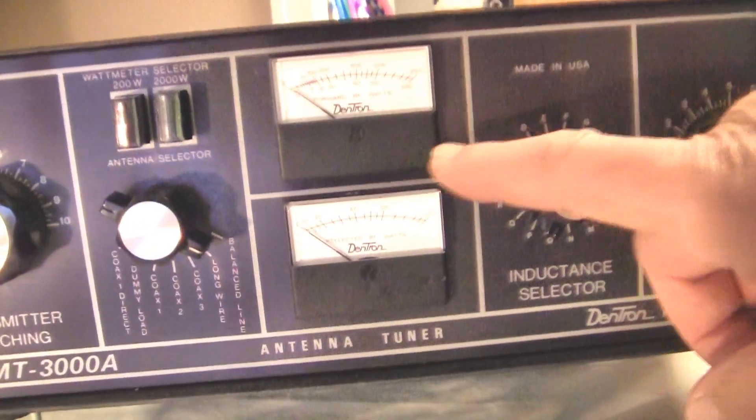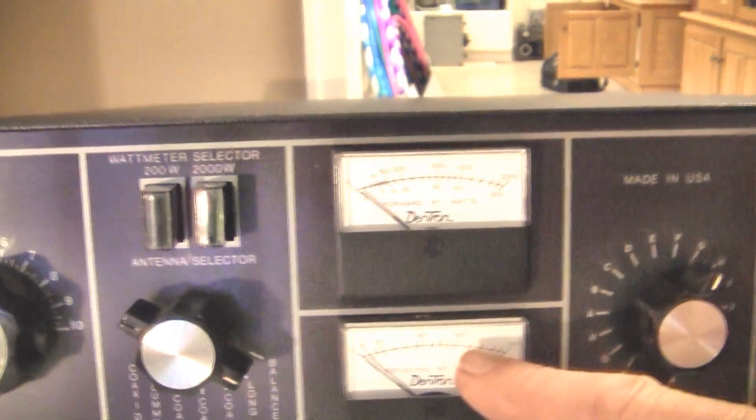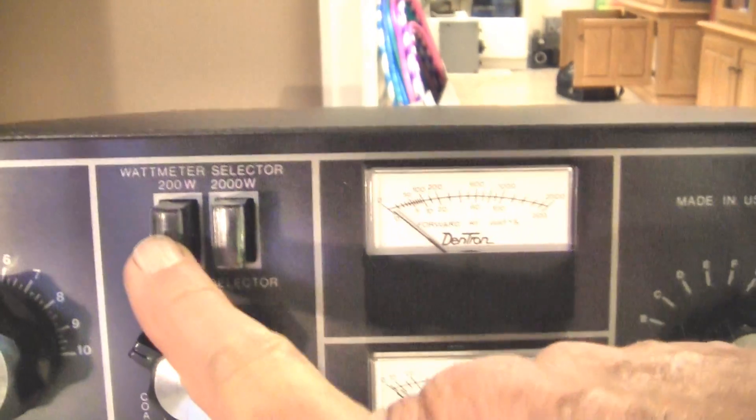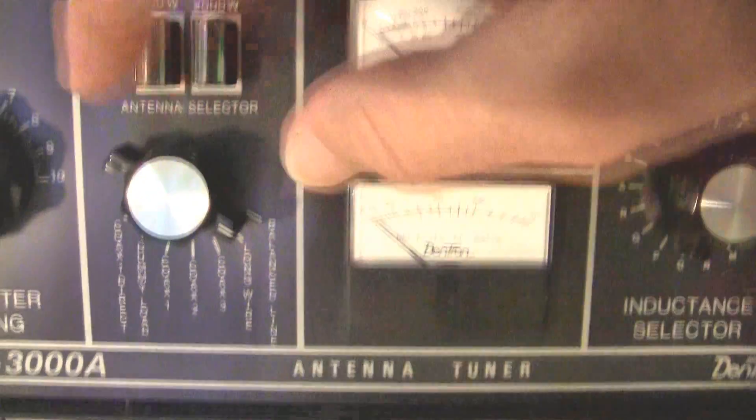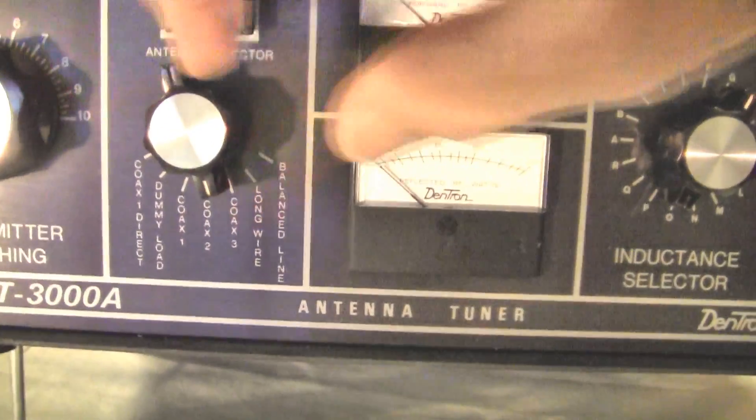We have a meter for forward reading power and reverse reading power. And we have two switches here, one to calibrate those meters for 200 watts or 2 kilowatts. Here's the function switch to select which antenna and coax and so forth.